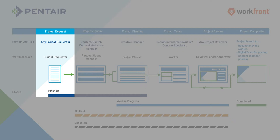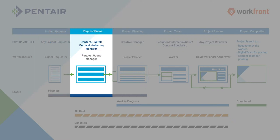This form will then send populated data to a request queue manager. The person who runs this part of the process is dependent on your segment. This person is in charge of approving the project, turning it into a work in progress, denying the project or canceling it, or putting the project on hold until they can gather more information.